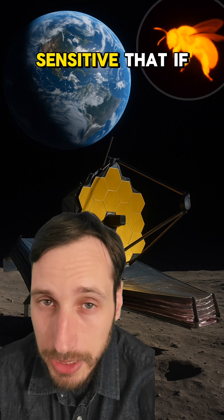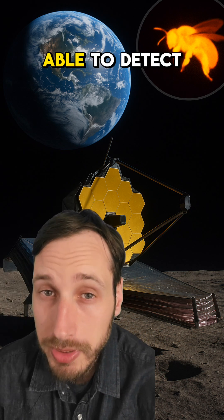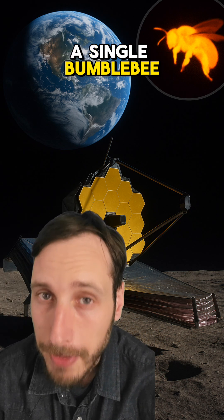The James Webb telescope is so sensitive that if it were on the Moon, it would be able to detect the heat of a single bumblebee back on Earth.